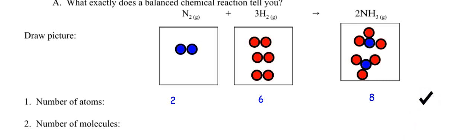How about molecules? How many molecules of N2 do I have? I have one. How many molecules of H2 do I have? I have three. How many molecules of ammonia, NH3, do I have? Two. So the question is, does one plus three equal two? No, it does not. So this is not the law of conservation of matter, is it? You don't count your number of molecules. You need to count your number of atoms.